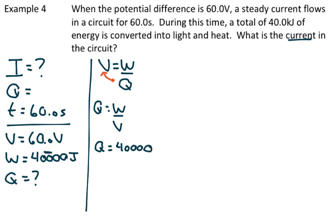Work was 40,000 joules. Voltage was 60 volts. Divide that out, we get 667 coulombs of charge.